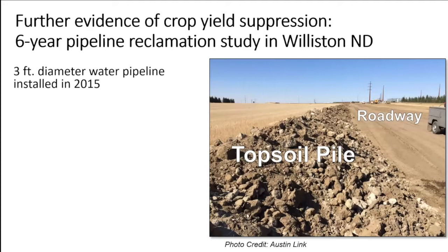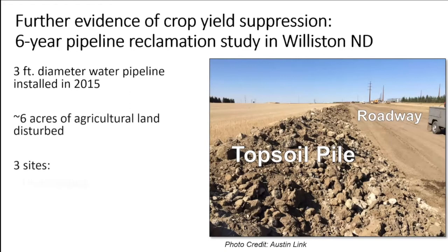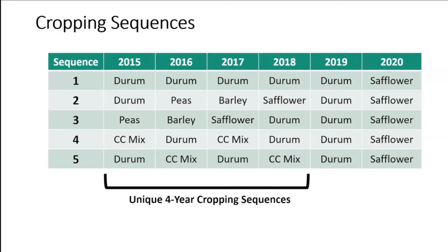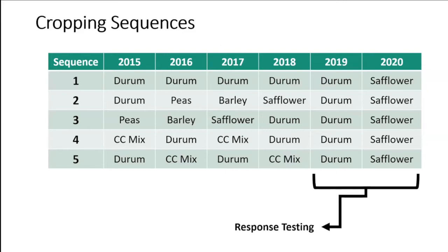Austin Link, who was at the Williston Research and Extension Center quite a few years ago, got a sizable amount of money from the oil and gas research program — we're very thankful for that. We started a six-year study looking at different cropping sequences common in the region. We had four unique cropping sequences: sequence one being durum every year, then durum-peas, and so on down the list. The last two years were kept the same so we could compare apples to apples.